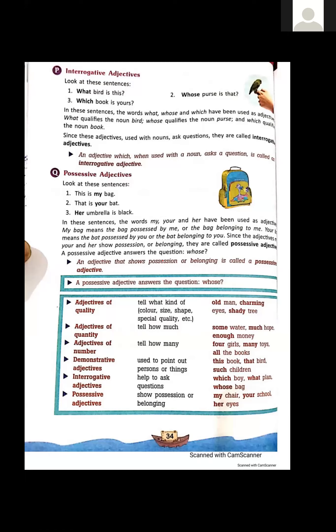Three examples are given. First: 'What bird is this?' Second: 'Whose purse is that?' Third: 'Which book is yours?' In all three sentences, the words what, whose, and which have been used as adjectives.